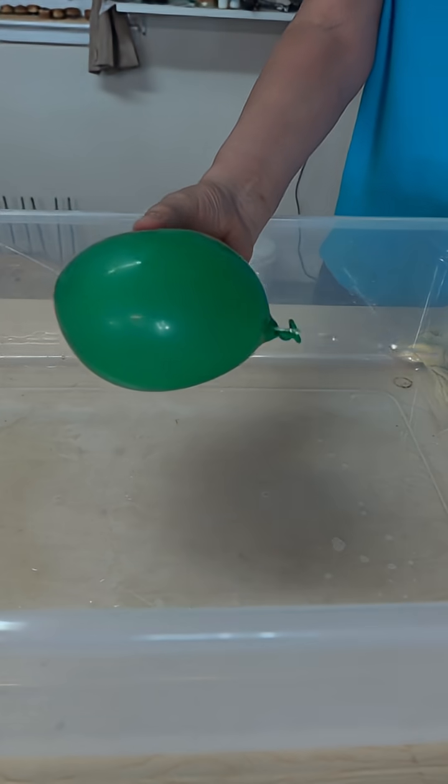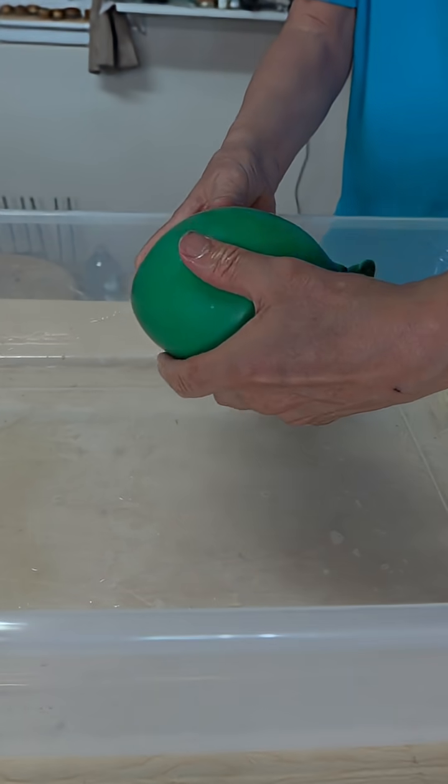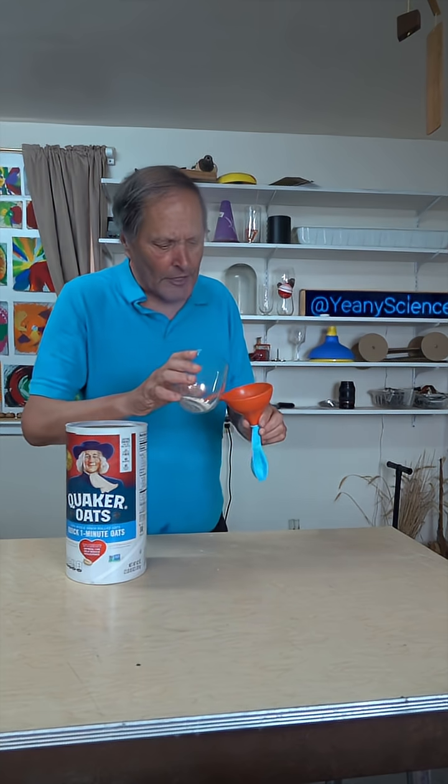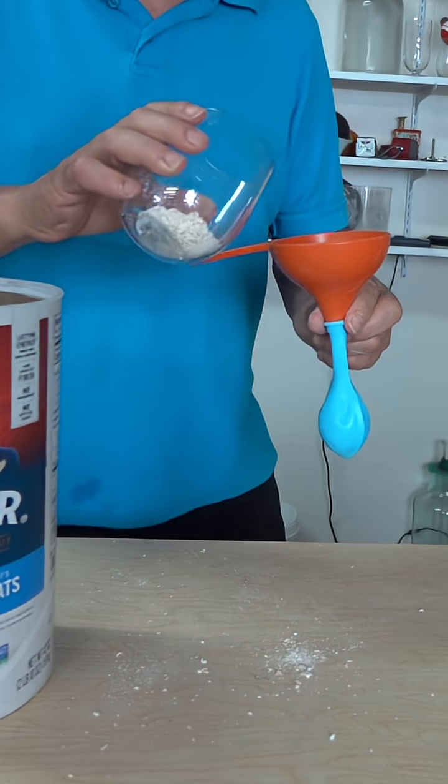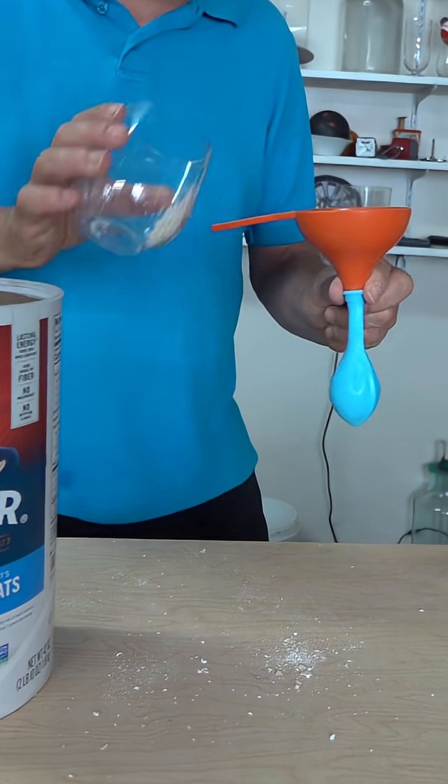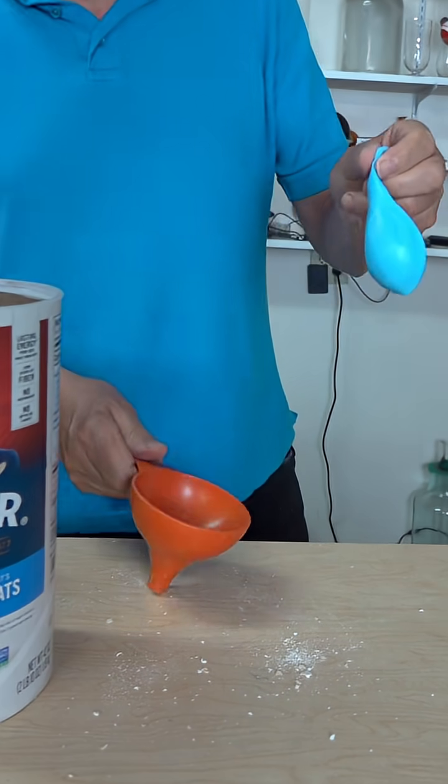It doesn't leak until you pull the skewer back out. Now if I want to make this balloon self-sealing, I'll simply add about a tablespoon of ground-up oatmeal to it and then fill it up with water.